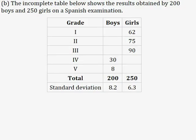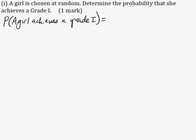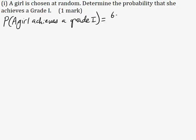Part B: The incomplete table below shows the results obtained by 200 boys and 250 girls on the Spanish examination. Part 1: A girl is chosen at random. Determine the probability that she achieves a grade 1 for one mark. The probability a girl achieves a grade 1 is 62 divided by 250, since there are 62 girls who got grade 1 out of the 250 girls. This gives a probability of 0.248.